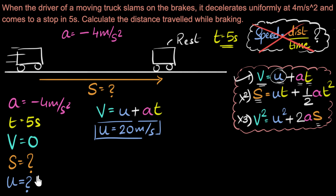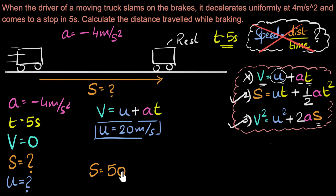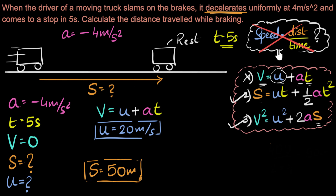Now that we know U, we can find S. The first equation is useless since there's no S in it. We can use the second equation — U, T, and A are all known — or the third equation, since V and U are both known. Using either equation gives S equal to 50 meters. The key takeaway is: for accelerated or decelerated motion, we cannot use speed equals distance over time because speed is continuously changing. But if acceleration is uniform, use the three equations of motion — write down what's given, what's asked, and choose the right equation.